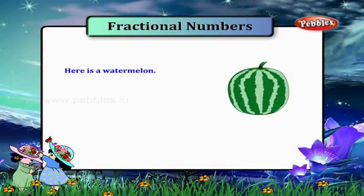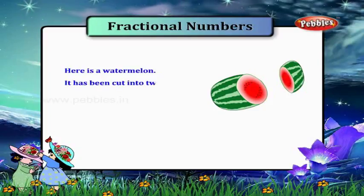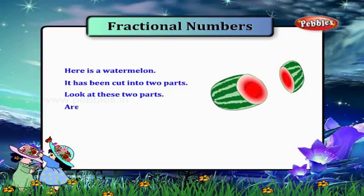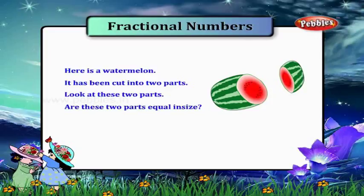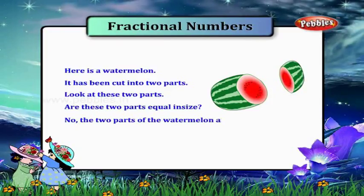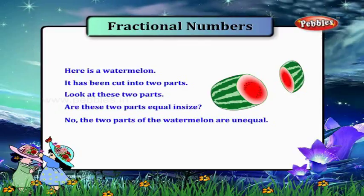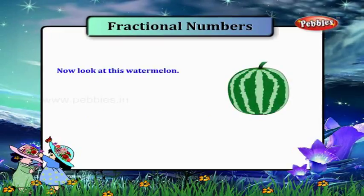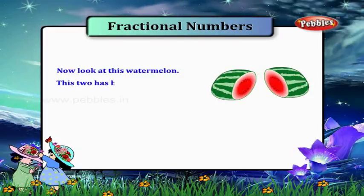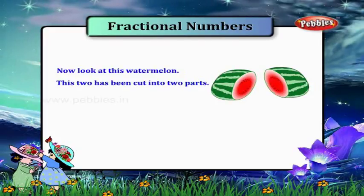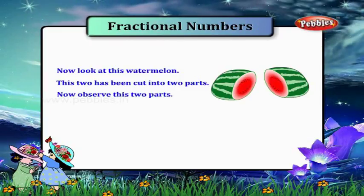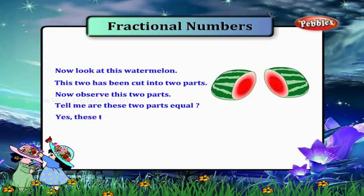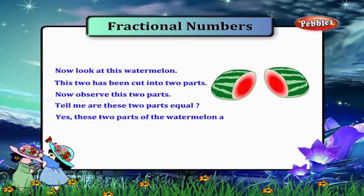Here is a watermelon. It has been cut into two parts. Look at these two parts. Are these two parts equal in size? No, the two parts of the watermelon are unequal. Now look at this watermelon. This too has been cut into two parts. Now observe these two parts and tell me, are these two parts equal? Yes, these two parts of the watermelon are equal.